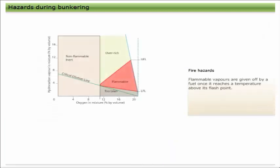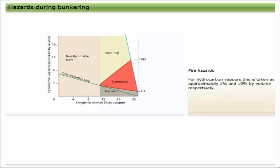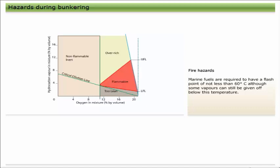Flammable vapors are given off by fuel once it reaches a temperature above its flashpoint. The flashpoint is defined as the temperature at which vapors given off can be ignited by an external ignition source. When fuel vapor is mixed with the required amount of oxygen to form a flammable mixture and an ignition source is present, fire or explosion can occur. A flammable mixture has a concentration of vapor between the lower explosive limit and the upper explosive limit — for hydrocarbon vapors approximately 1% and 10% by volume respectively. To prevent fire or explosion it is necessary to either avoid formation of a flammable mixture or remove any possible ignition source. Marine fuels are required to have a flashpoint of not less than 60 degrees Celsius.